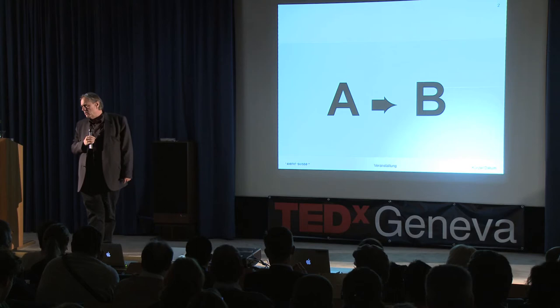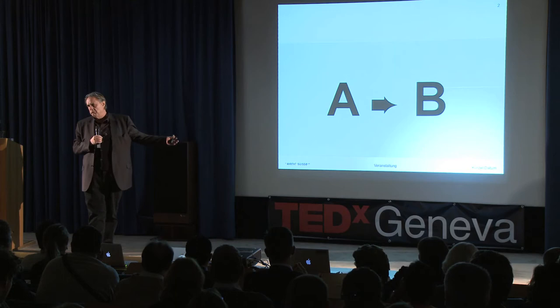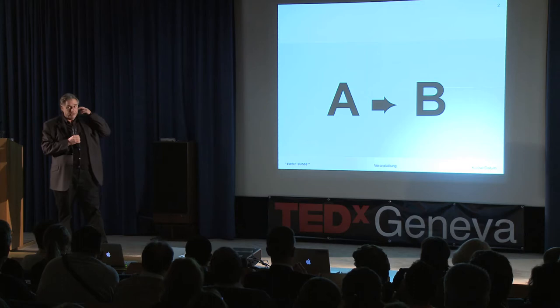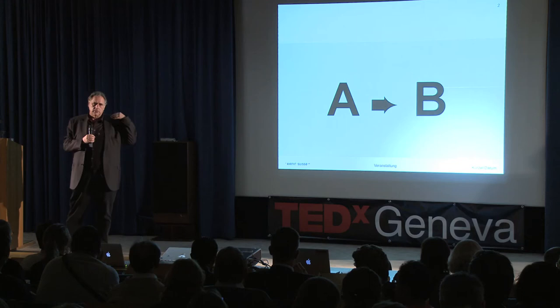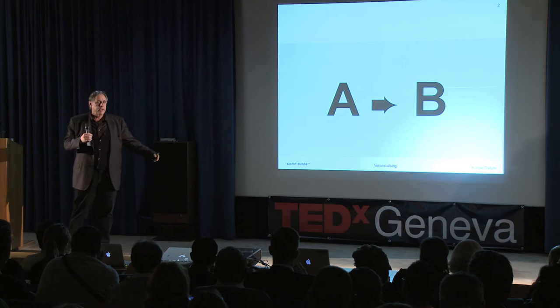And then, thanks to Gutenberg, A can even write a book. The book will go to B and C and D and everyone. Or later on, a guy invented the telegraph, so it was quicker — A sends the telegraph to B. Later on, somebody invented the telephone, so A takes a phone and talks with B. Later on, radio, TV.